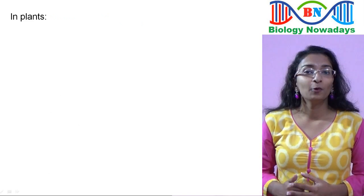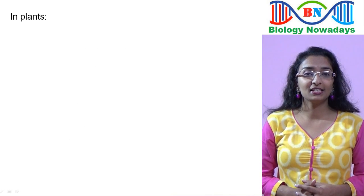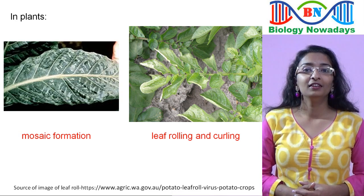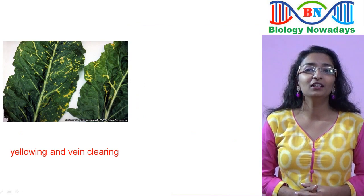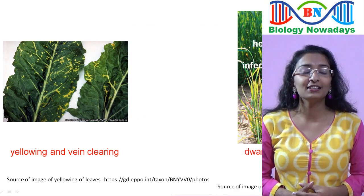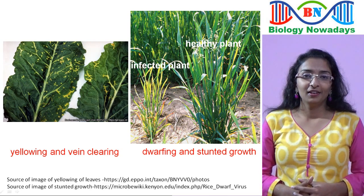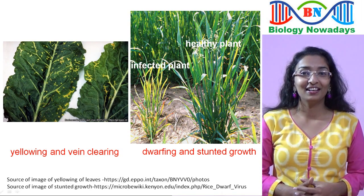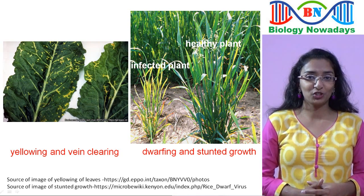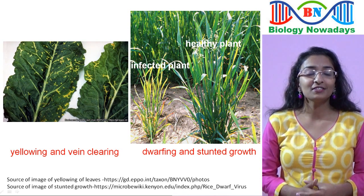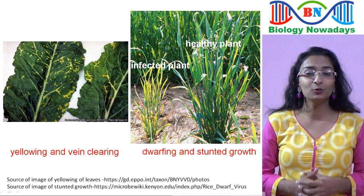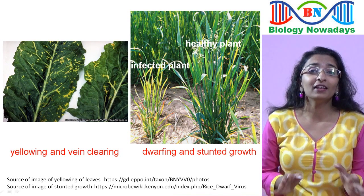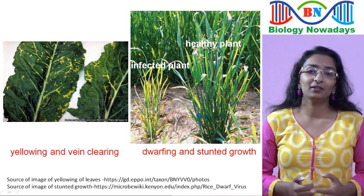In plants, viruses show symptoms such as mosaic formation, leaf rolling and curling, yellowing and vein clearing, dwarfing and stunted growth. Do you know the story behind the discovery of viruses? It started when Louis Pasteur understood that the causative agent of rabies was too small — too small meaning he was not able to see it under a light microscope. However, he failed to identify the causative agent.